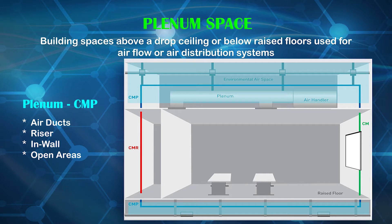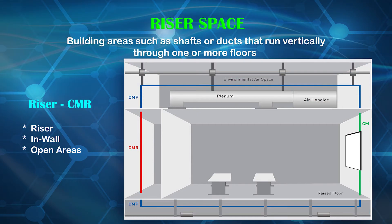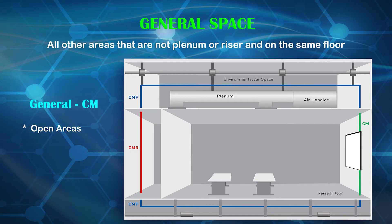Plenum spaces are building spaces above a drop ceiling or below raised floors used for airflow or air distribution systems. They include air ducts, riser in-wall, and open areas. Riser spaces are building areas such as shafts or ducts that run vertically through one or more floors, and include riser in-wall and open areas. General purpose spaces are open areas and all other areas that are not plenum or riser and on the same floor.